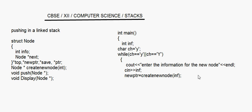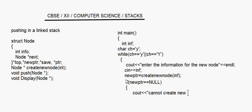After create_new_node returns, new_ptr contains the address of the new node. We check if new_ptr equals null. If it does, the new node was not created, so we cout 'cannot create new node' and call exit(1). If new_ptr is not null, execution continues to the next statement.